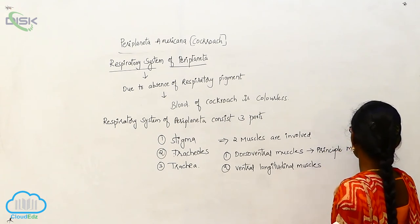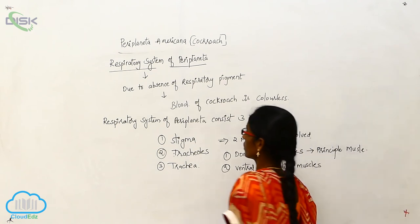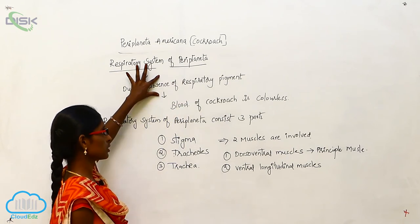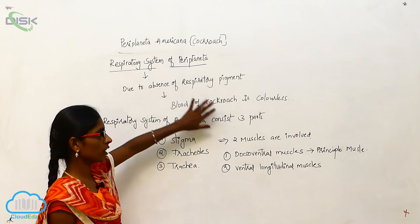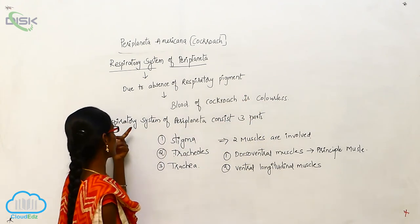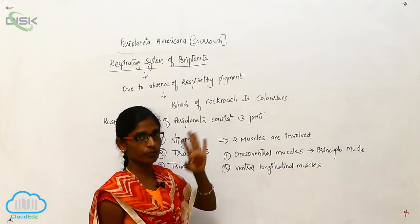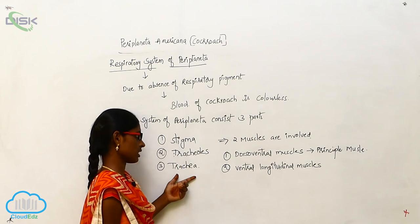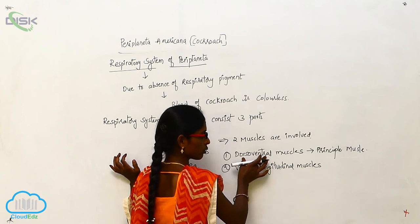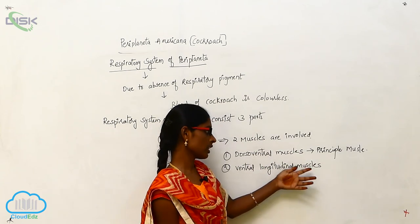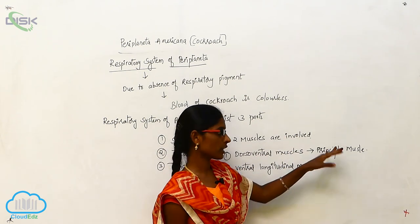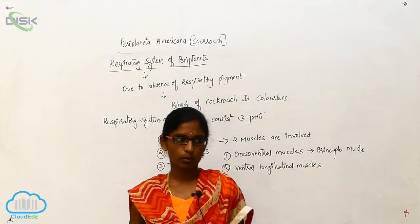So, the blood of cockroach is colorless and is also called lymph. The respiratory system of Periplaneta consists of three parts: Stigma, Tracheals, and Trachea. In this respiration, two muscles are involved: the Dorsoventral Muscle and the Ventral Longitudinal Muscle. The Dorsoventral Muscle is the principal muscle for the respiration of cockroach.